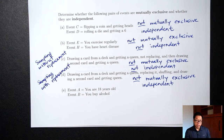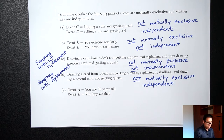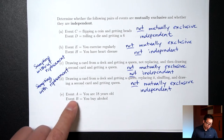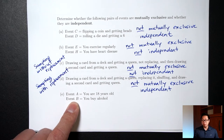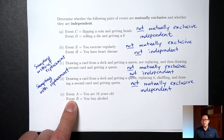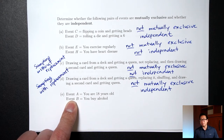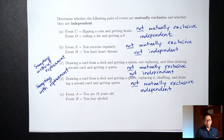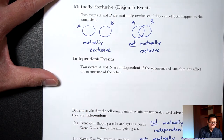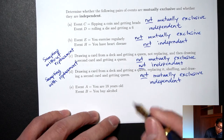Part E: event A is you are 18 years old; event B is you buy alcohol. First, are these two things mutually exclusive? Can you be 18 years old and at the same time buy alcohol from a store — legally? To buy alcohol in this country you have to be 21 or over. So these two things cannot both happen at the same time. Since they cannot happen at the same time, this would be mutually exclusive.